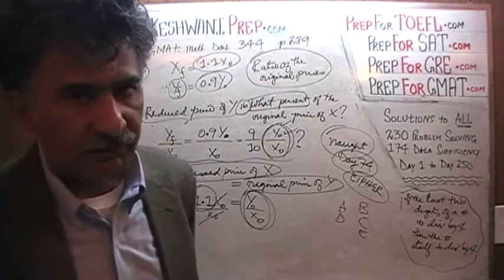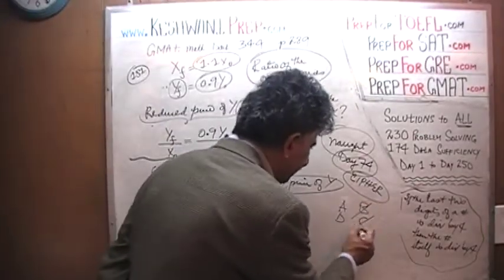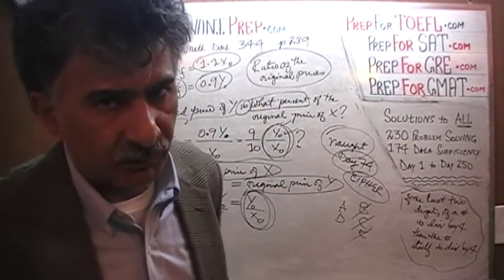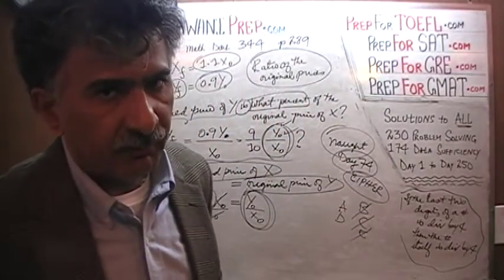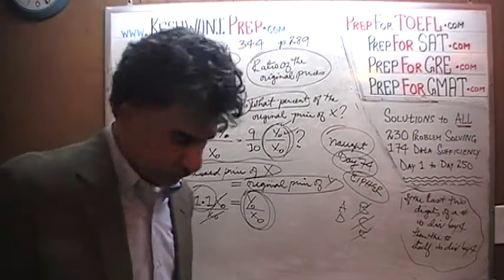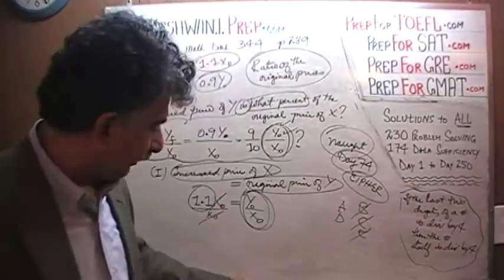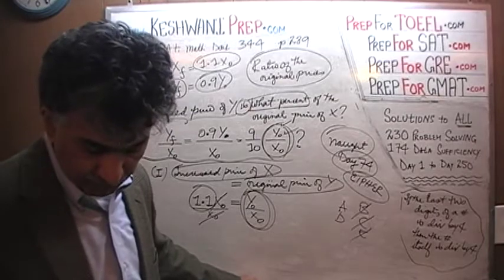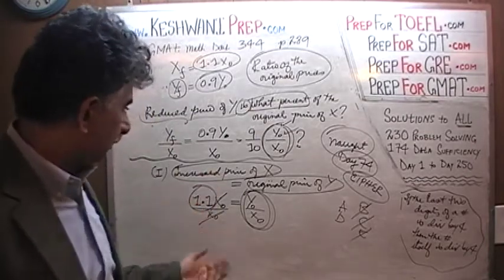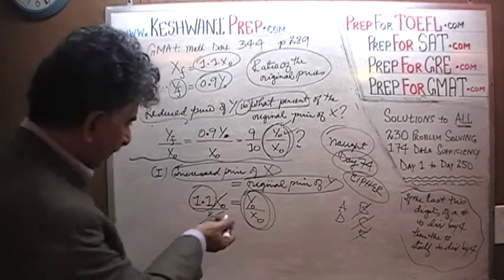Now that we've established the first statement by itself is enough, we know the answer cannot be B, C, or E. We have a 50-50 chance — the answer will be either A or D. Once we understood we were looking for the ratio of the original prices, the first statement gave us exactly that with just one step.